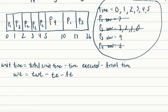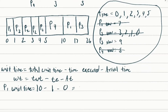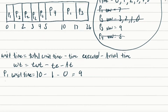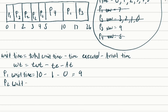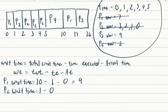P1's wait time: total wait time is 10 (that's when P1 starts executing again), minus time executed which is 1 millisecond, minus arrival time of 0 — that equals 9 milliseconds. P2's wait time: total wait time is 1, minus 0 time executed, minus arrival time of 1 — that equals 0. So P2 had no wait time.